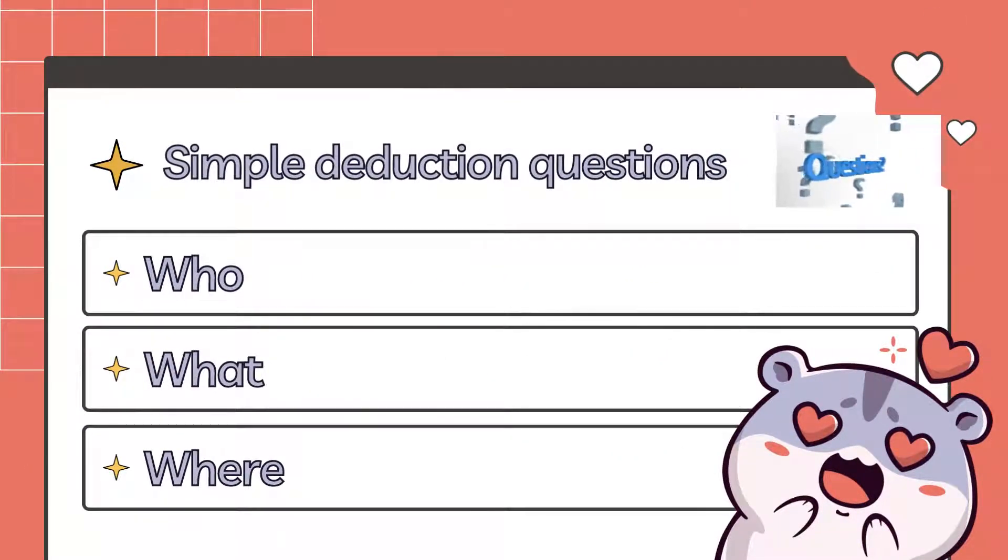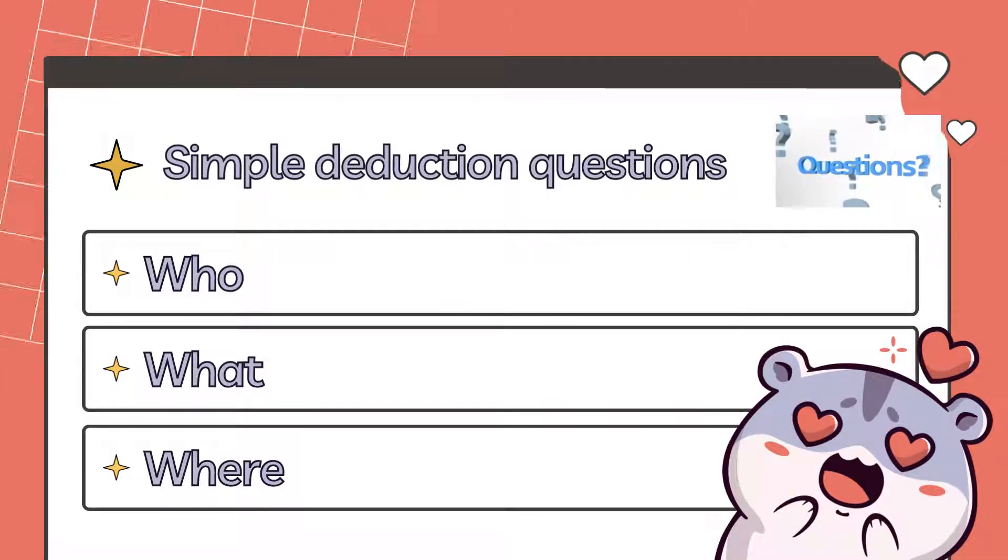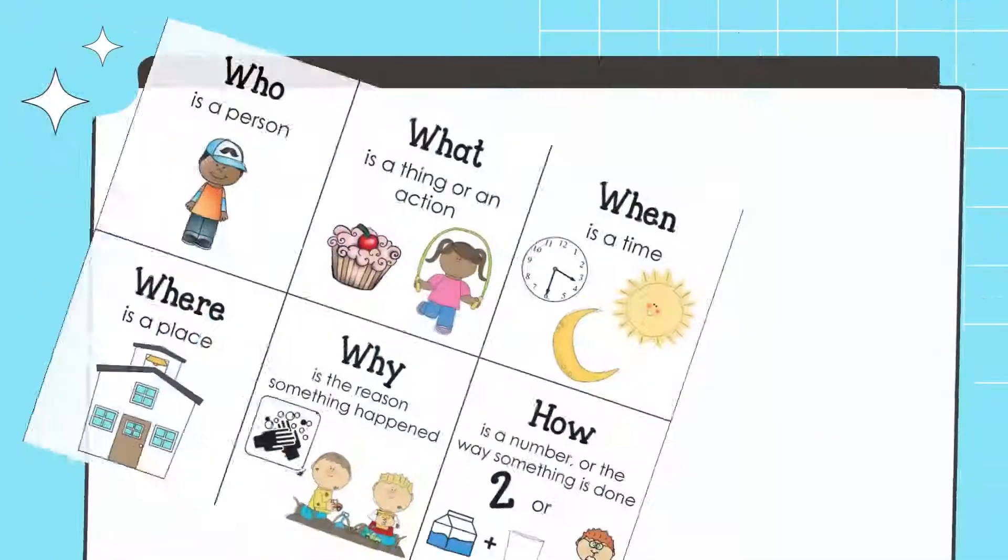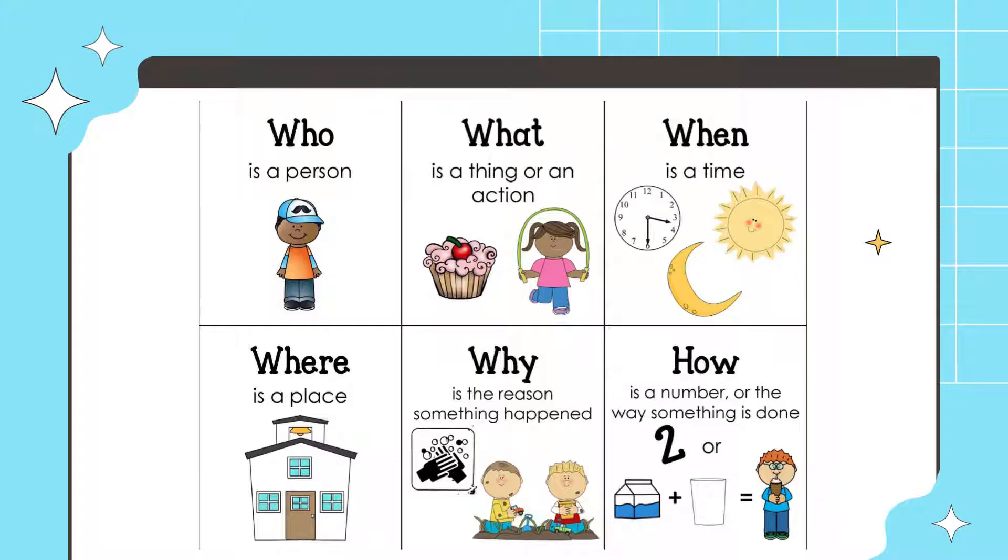Okay, here are some simple deduction questions, or the easier way to remember is simple question words like the first one: who, what, where, why, when, how.